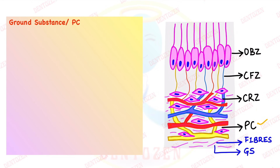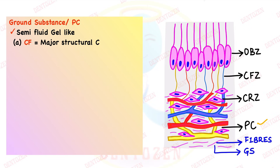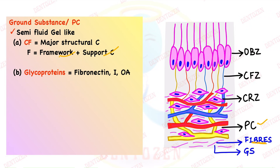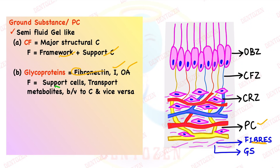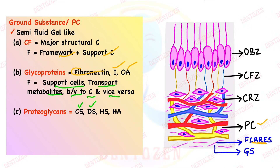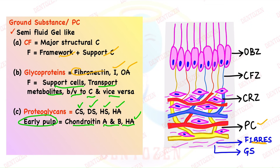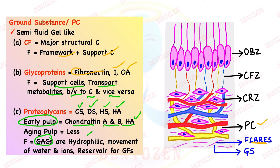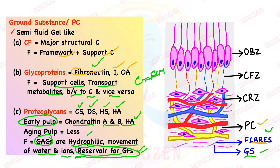Ground substance can be seen in the pulp core. It is a semi-fluid gel-like consistency. Collagen fiber is the major structural component, forming the framework and support system for other components. Glycoproteins like fibronectin, integrins and osteonectin can also be seen — they provide support to cells and transportation of nutrients from blood vessels to cells. Glycosaminoglycans include chondroitin sulfate, dermatan sulfate, heparin sulfate and hyaluronic acid. Chondroitin A, B and hyaluronic acid are more in early pulp and decrease in aging pulp. Glycosaminoglycans are hydrophilic and help in movement of water and ions, and can act as reservoir for growth factors.